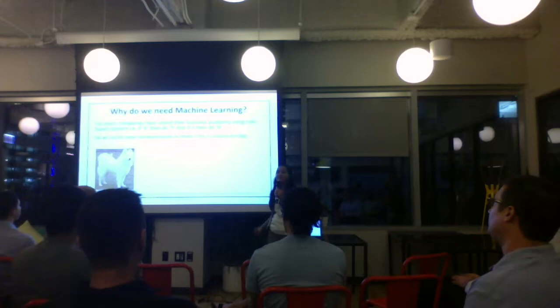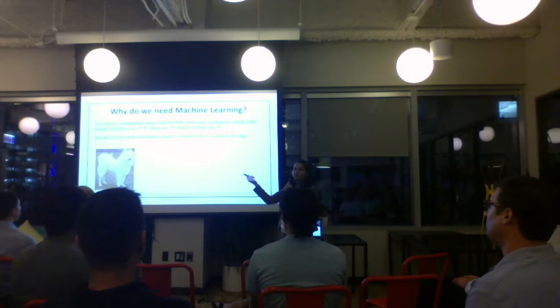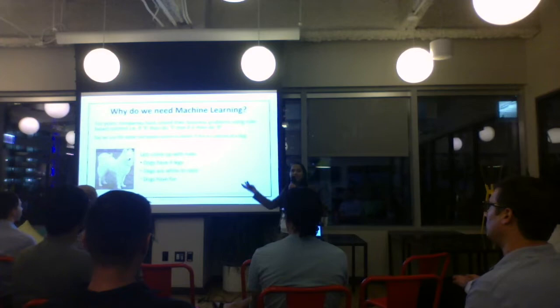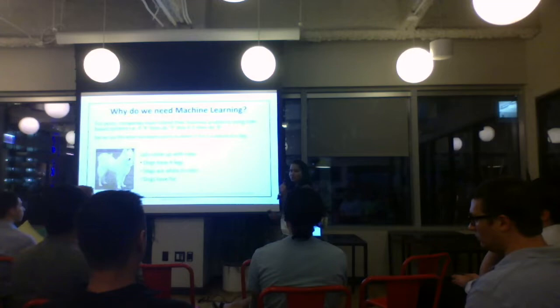Let's try to apply the same rule-based system to identify whether a picture is of a dog. How do we come up with the rules? Dogs have four legs. The dog in this picture is white. Dogs have fur. So if we give these rules to the machine, guess what it comes up with.